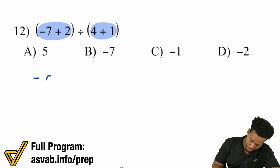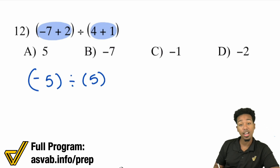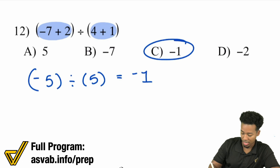So negative five over here, and then four plus one is five. Negative five divided by five — that's going to be negative one, and that's C.